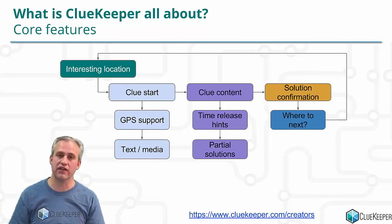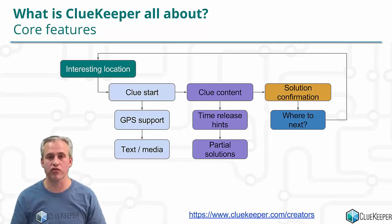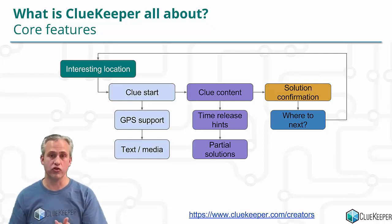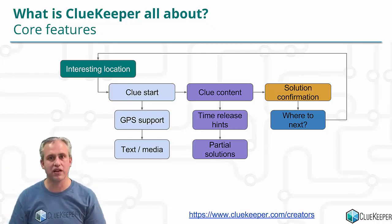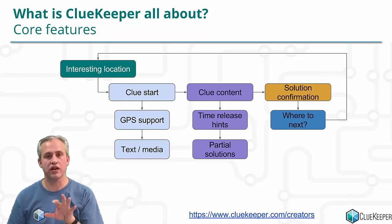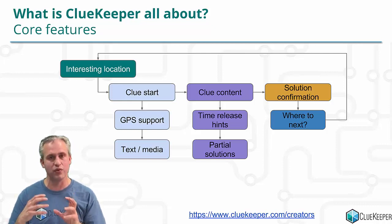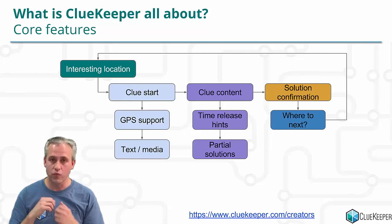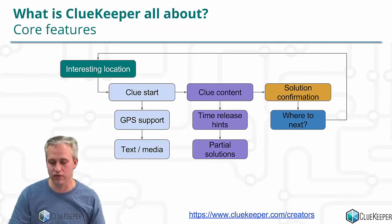You can have hints that are free after a certain amount of time, or players can buy hints. We can also help with partial solutions — if somebody's on the right track, you can give them that feedback. It's very scalable and uniform. When we get the solution, we confirm it's correct and tell them where to go next, and the cycle begins all over again. These seem like simple core features, but if you've ever run a puzzle hunt, they're really hard to do with pencil and paper, and software fixes that.